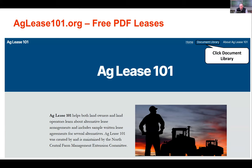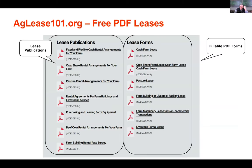Here's what that aglease101 website looks like — click into the document library to find the list of forms. The fillable cash lease forms are on the right; it includes cash leases, crop share leases, pasture leases, farm building leases, machinery leases, and livestock rental leases. It's really quite complete and gives you a great place to start to have written leases for all your situations. The publications on the left give you background information on how to set those leases up.